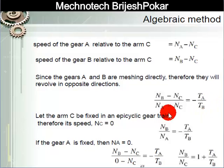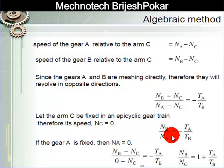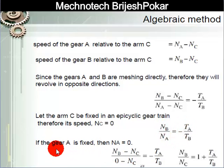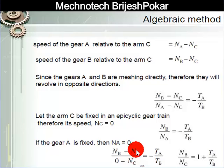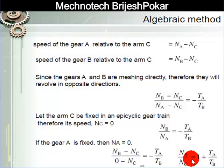If the arm is fixed, Nc = 0, so Nb/Na = −Ta/Tb, which is consistent with what we saw earlier. If gear A is fixed, Na = 0, substituting into the equation: (Nb − Nc)/(0 − Nc) = −Ta/Tb, which simplifies to Nb/Nc = 1 + Ta/Tb.